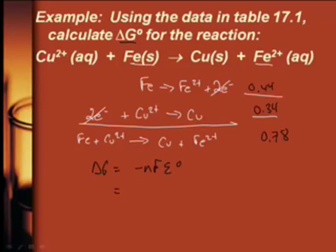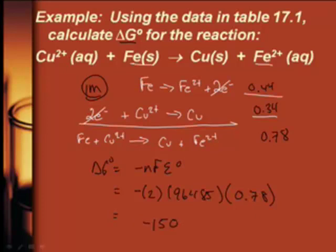Shouldn't it be delta G naught since it's standard electrical potential? Yes, we are making an assumption that everything is in standard conditions — one molar solutions and 25 degrees Celsius. N was 2, times F which is 96,485, times E naught of 0.78. You get negative 150,517 joules per mole, which is way too many significant digits, so if we divide by 1,000 you get negative 151 kilojoules per mole.